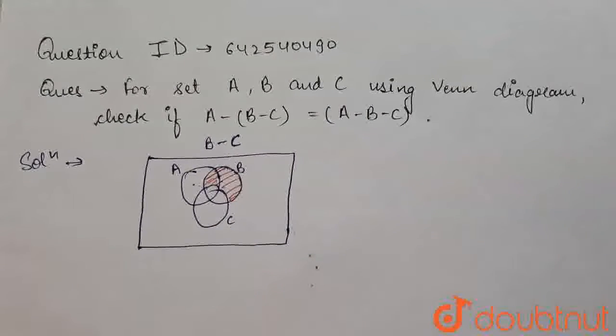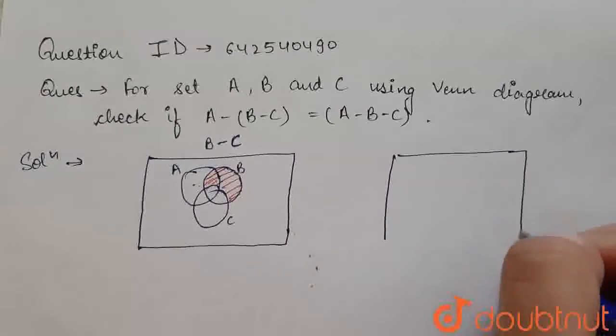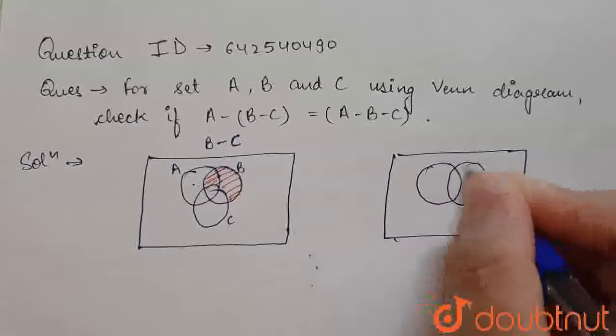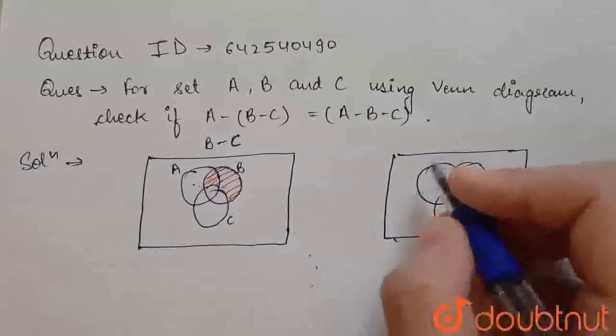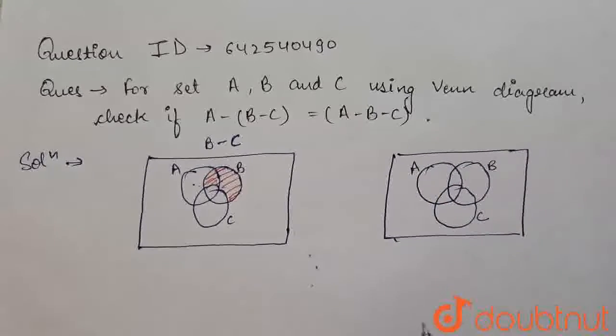Now, I have to calculate A minus B minus C. So, in another Venn Diagram, I am showing this. This is A, this is B, this is C. A, B and C.